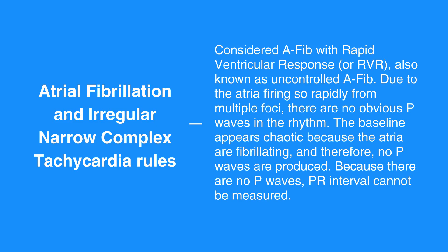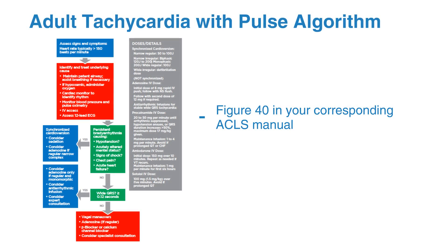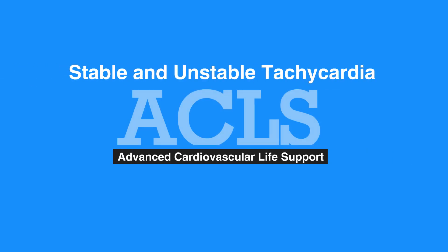The QRS complex measures less than 0.12 seconds. For the adult tachycardia with pulse algorithm, refer to figure 40 in your corresponding ACLS manual. This concludes our lesson on stable and unstable tachycardia. Next, we'll review Acute Coronary Syndrome.